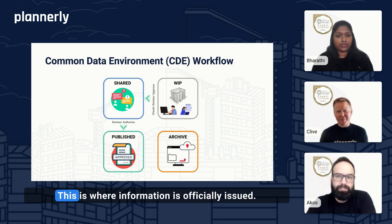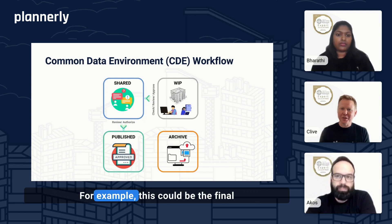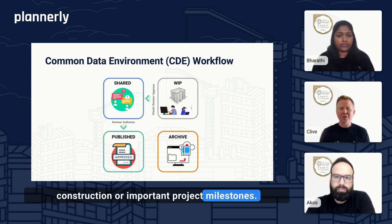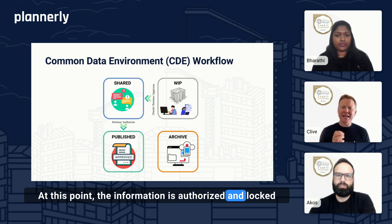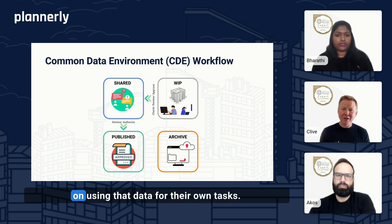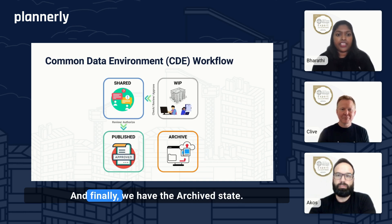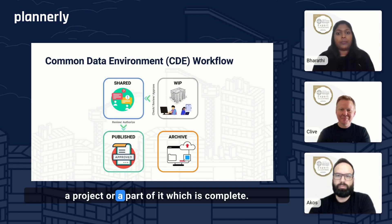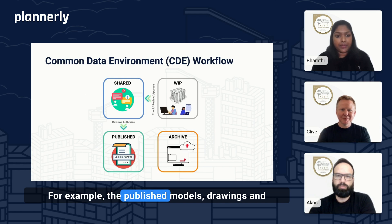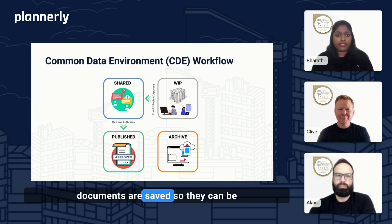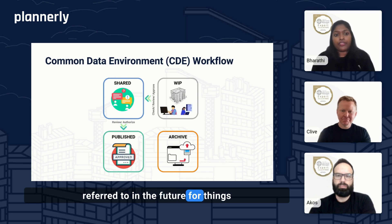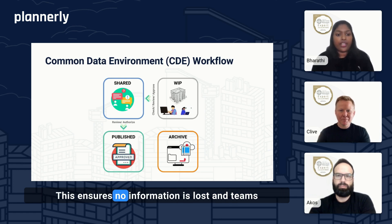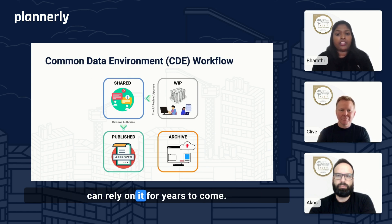Then we move to the published state, where information is officially issued — for example, final models or reports ready for construction or important project milestones. At this point, the information is authorized and locked so that teams know they can rely on that data for their own tasks. And finally, we have the archived state — like putting everything safely into storage for a completed project or part thereof. Published models, drawings and documents are saved so they can be referred to in the future for things like maintenance, operations, or even future renovations, ensuring no information is lost and teams can rely on it for years to come.